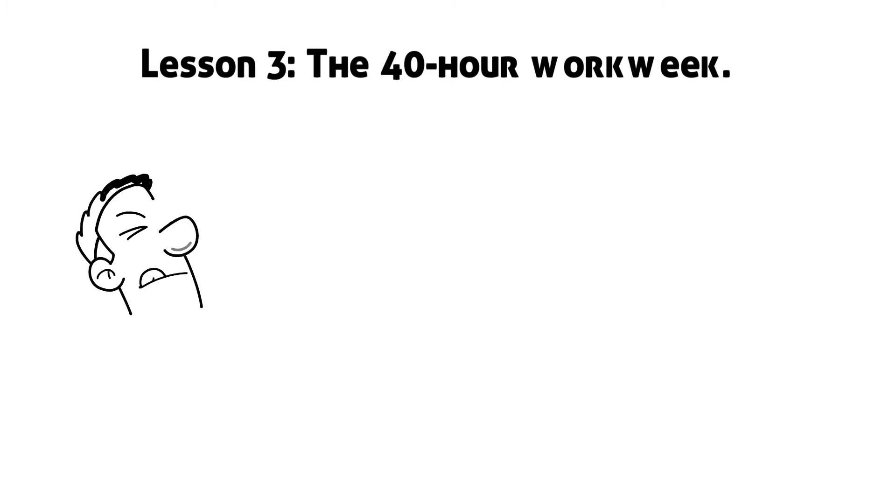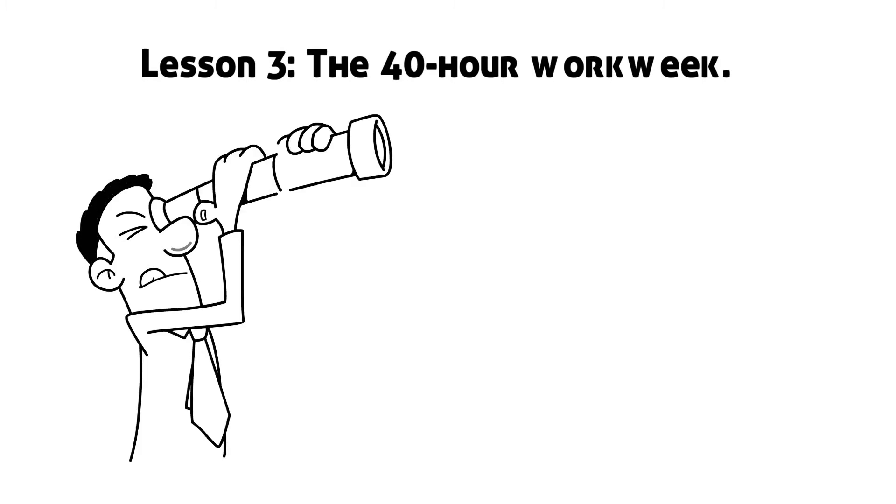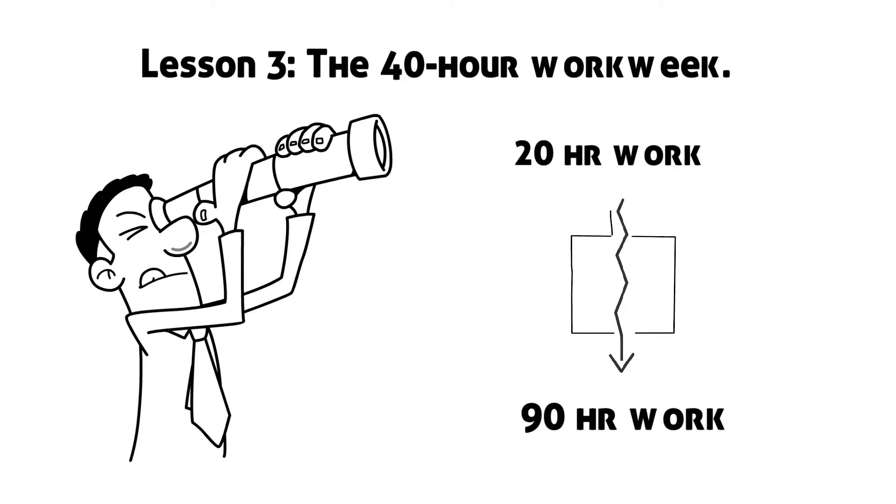In his experiment, Chris went all the way from 20-hour workweek to 90-hour workweek and found he accomplished more or less the same in both extremes. Thus, he thought he might as well pick the middle and work somewhere from 40 to 50 hours.